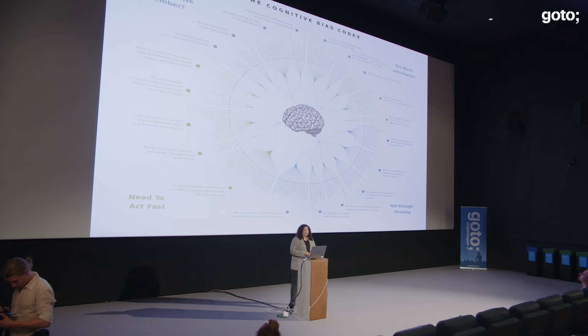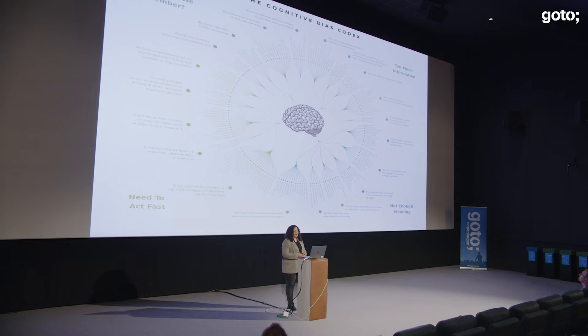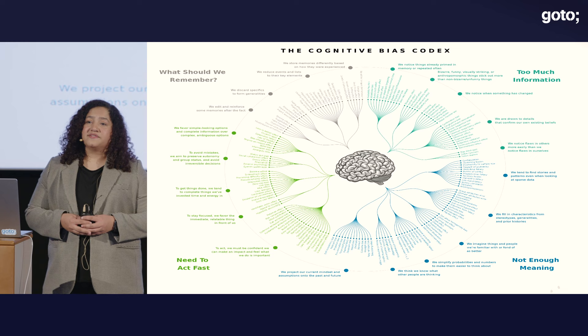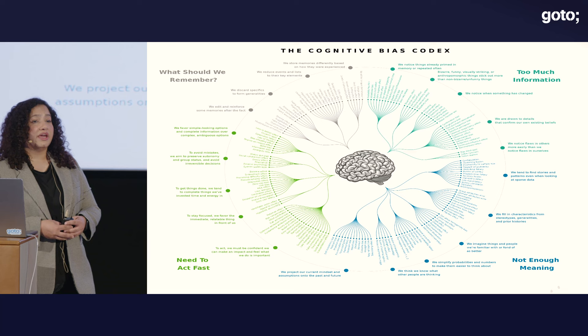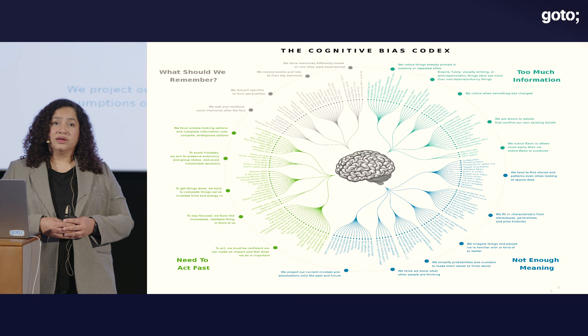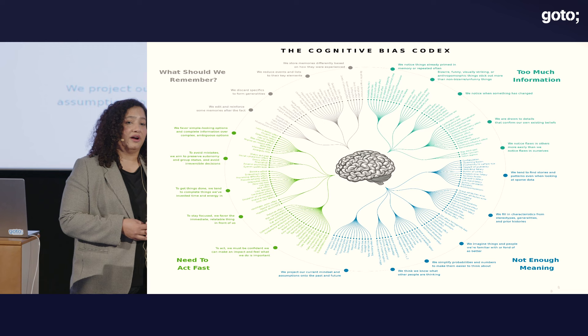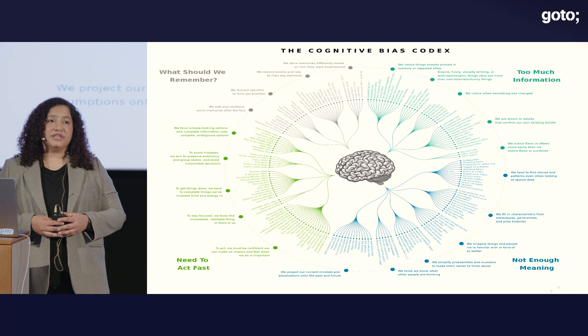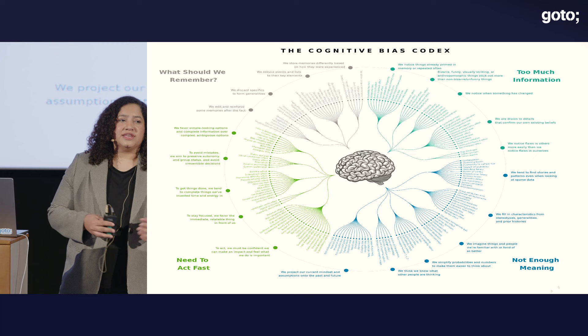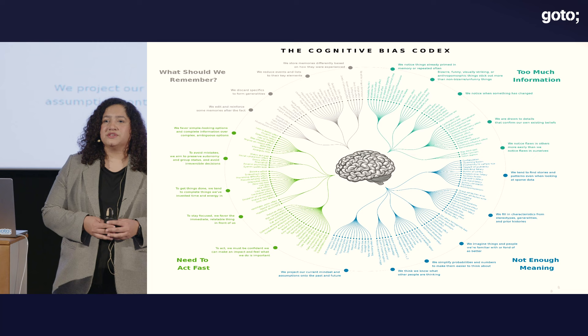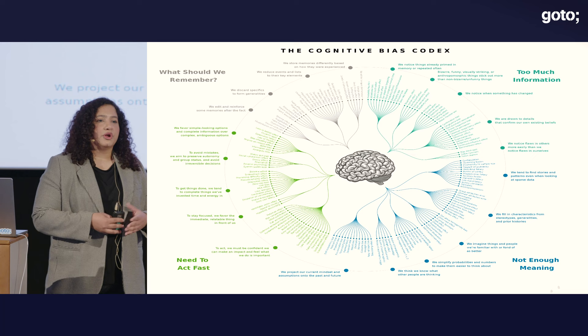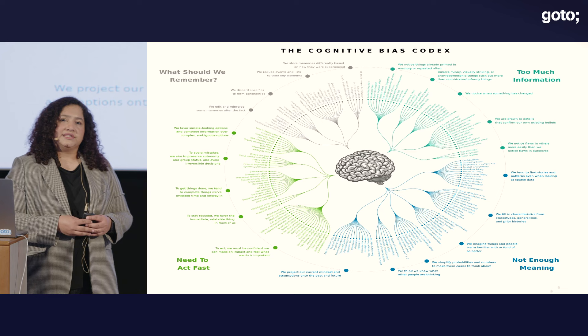This is the cognitive bias codex, which has been developed by John Manoogian III and Buster Benson. It gets updated on a daily basis, and to this date there are 150+ biases registered in this codex. All of these biases exist because of the cognitive limitations that our brain has. So all of you sitting here cannot deny that we are biased — because of these cognitive limitations, we are bound to be biased. What we can do is overcome these biases by understanding them.